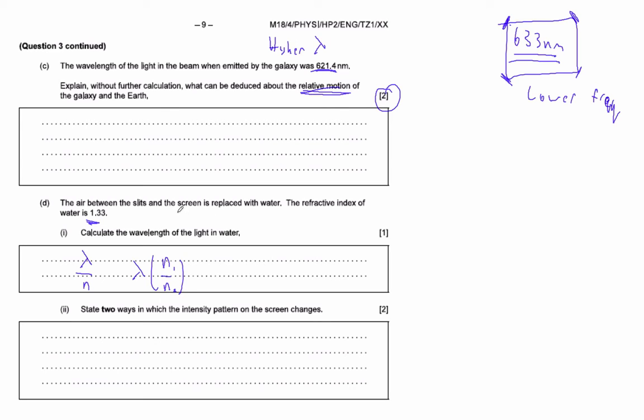Understand that as it slows down, as it goes from a vacuum or what is it? We assume it's air, I guess. As the waves slow down, the wavelength gets shorter.